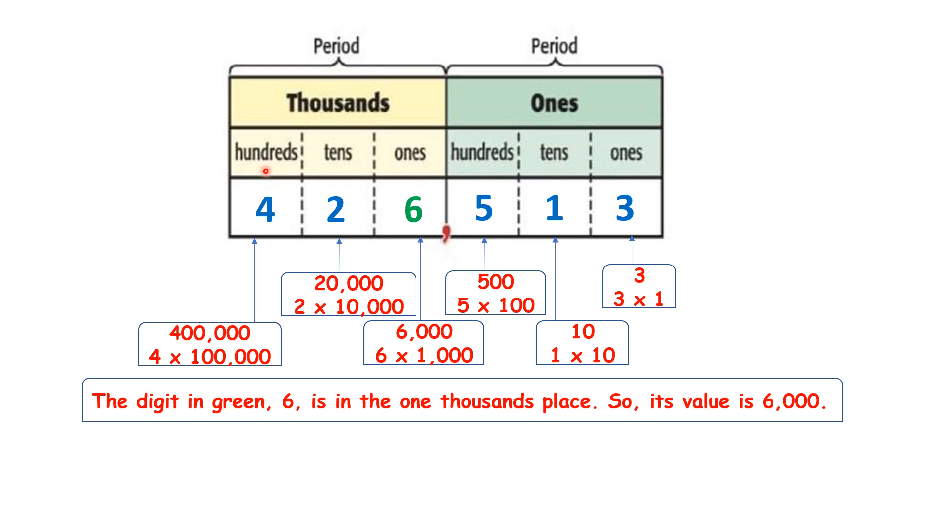For example, if we have the number 426,513, the 3 is in the ones period and it's in the ones. So this is its place value.